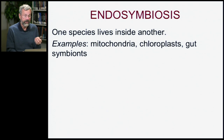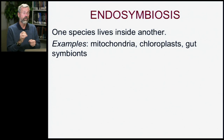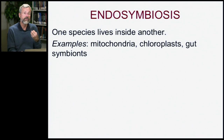Having covered the origins of eukaryotes and multicellularity, I now want to turn to another form of symbiosis. We're still looking at endosymbiosis to begin with, where one species lives inside another. Mitochondria and chloroplasts are endosymbiotic, where single-celled bacteria live inside the cell wall of the protist and then the eukaryote. But there are also gut symbionts, where animals — multicellular organisms — still have small organisms living inside their digestive system.